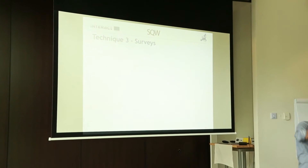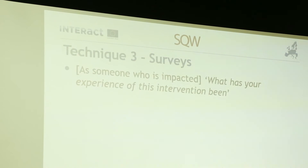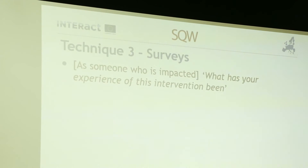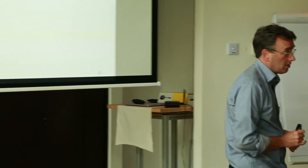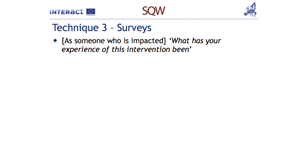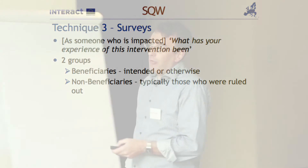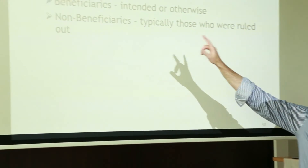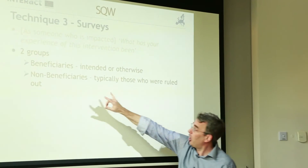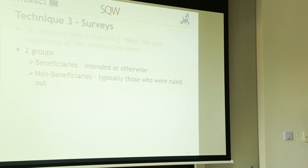The third technique frequently used is surveys — asking those who have been impacted: what is your experience of this intervention? Whereas one-to-one consultation tends to be relatively narrowcast, surveys tend to be pretty broadcast. You will typically, in your evaluations, be surveying most if not all of your programme beneficiaries. You may also be surveying quite a lot of those people who came to your programme and were turned down, because you want to understand what they did as a result of being turned down to begin to understand what added value your programme has delivered. There are two groups of beneficiaries: those you intended to support, and non-beneficiaries — typically those who were ruled out from participation because they did not fit, such as large firms or manufacturers of excluded products.